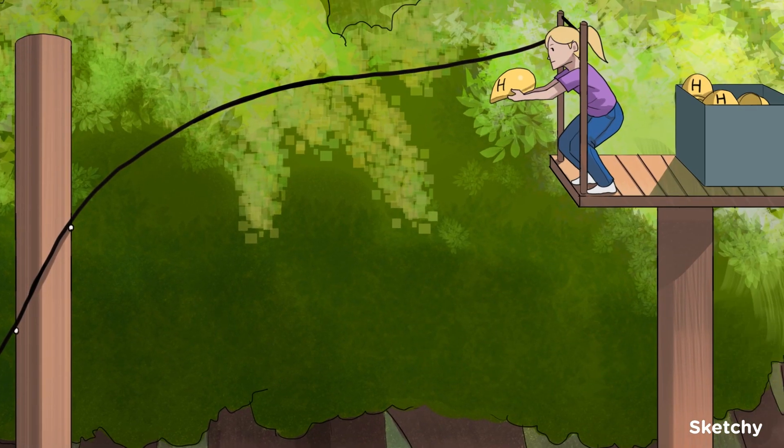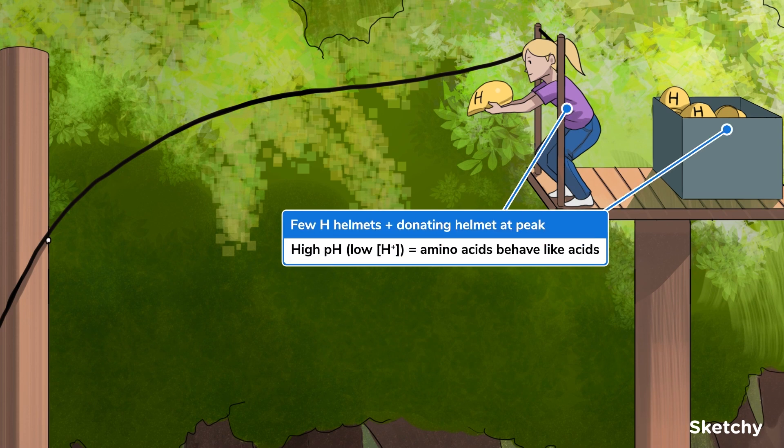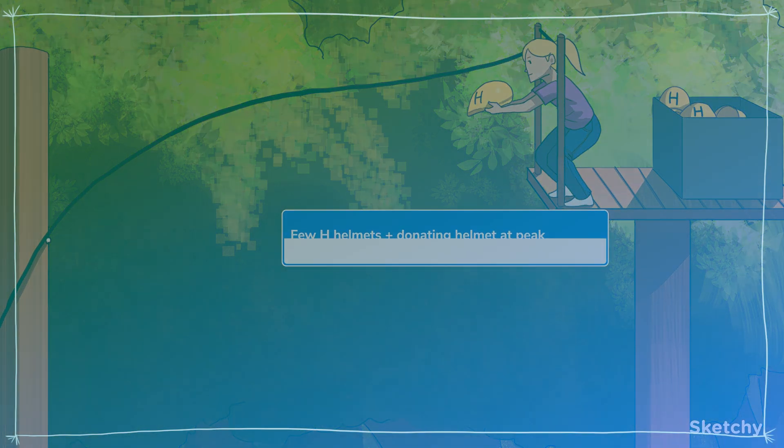In contrast, in a basic solution, or a high pH, the amino acids will behave as Bronsted-Lowry acids, donating the protons from their carboxyl sites. So that's why the box of helmets at the top is nearly empty. At a higher pH, amino acids can't help but to give their protons away. I'm pretty sure that's a safety violation, but maybe there's just enough for a few brave zipliners.